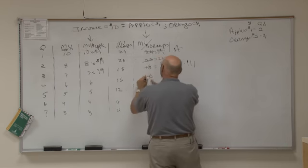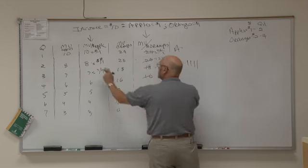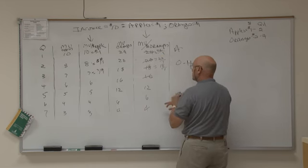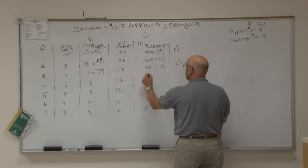16 versus 10, the next unit of oranges. 12 versus 10, I'll buy even another unit of oranges. 1, 2, 3, 4, 5.